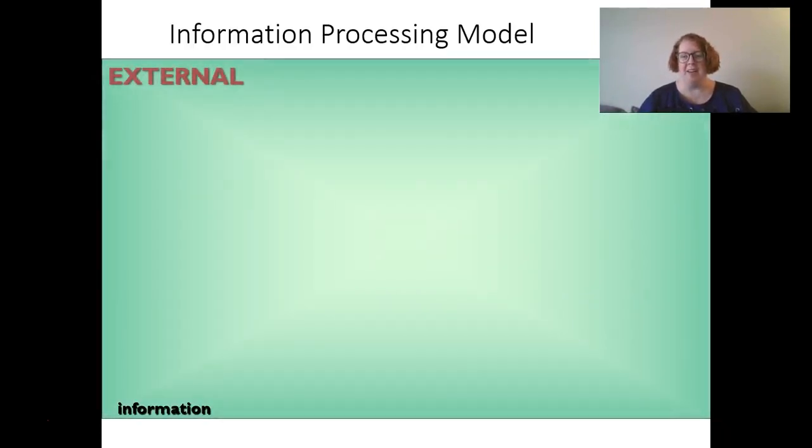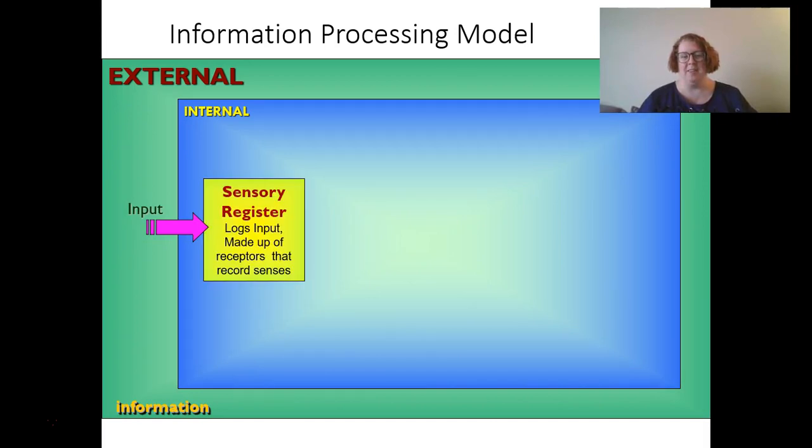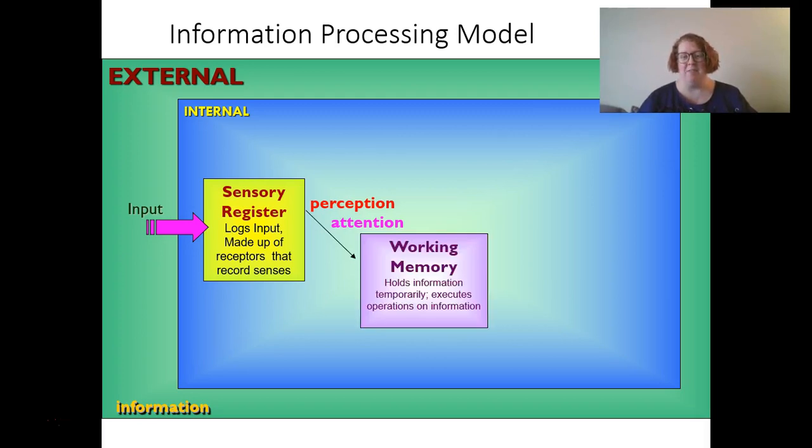Information processing theory starts with external information and our internal system where we get input to our sensory registers that have a huge amount of inputs. We only perceive a lot and we attend to some of that.